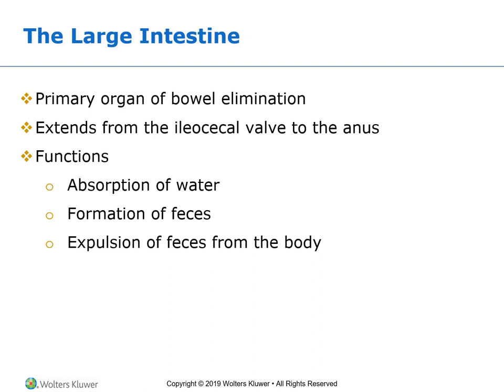For most adults, the large intestine is about five feet long, with variations in length. At its narrowest point it is about one inch wide, and at its widest point it can be as wide as three inches. The diameter decreases as it goes from the cecum towards the anus.